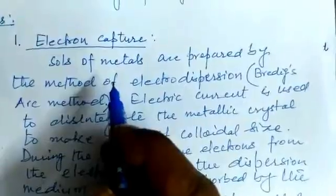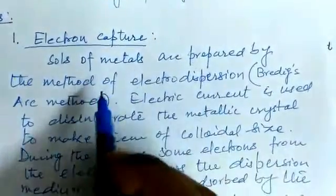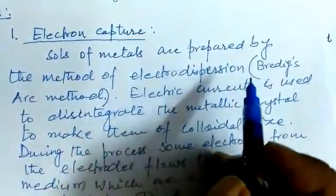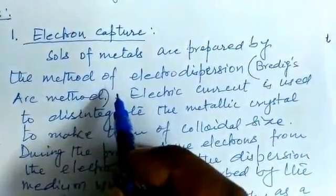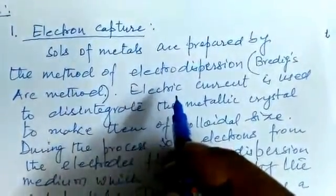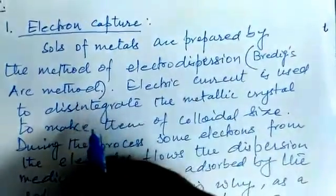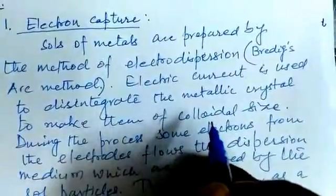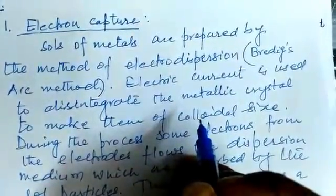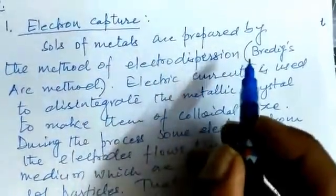Most of the metallic sols carry negative charge. Sols of metals are prepared by the method of electrodispersion. We have already discussed Bredig's arc method for preparation of gold sol, silver sol, platinum sol, etc. During this electrodispersion method, electric current is used to disintegrate or break down the metallic crystals to make them of colloidal size — bigger metallic crystals are broken down by the use of electric current.